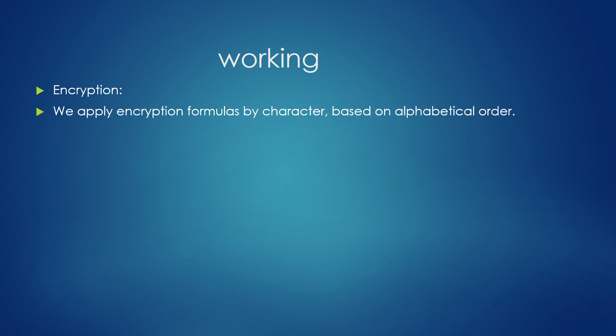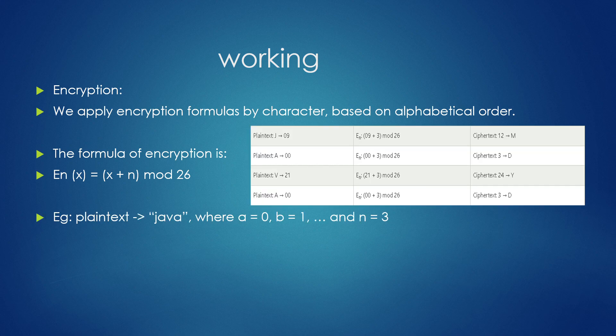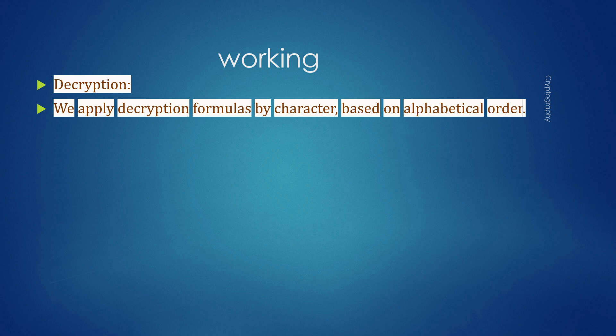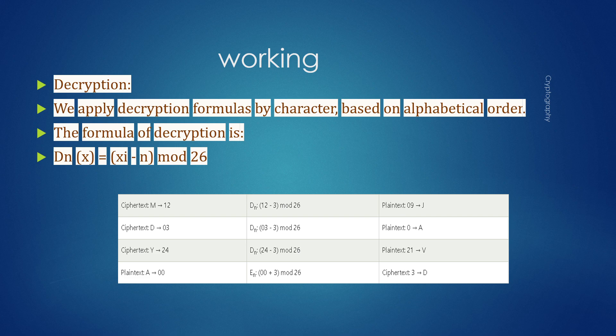For encryption, the formula is: E(x) = (x + n) mod 26, applied character by character based on alphabetical order. For decryption, the formula is: D(x) = (x − n) mod 26. Examples are provided for both encryption and decryption of the Caesar cipher.